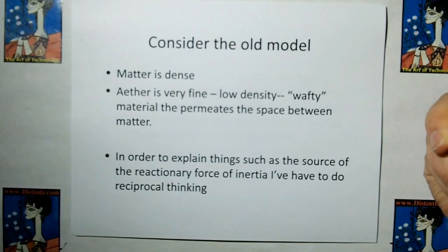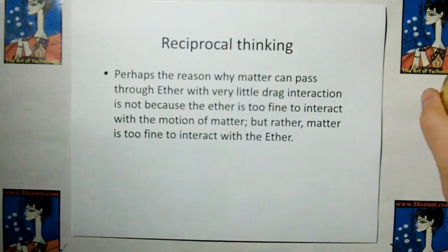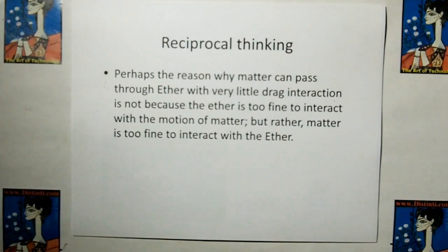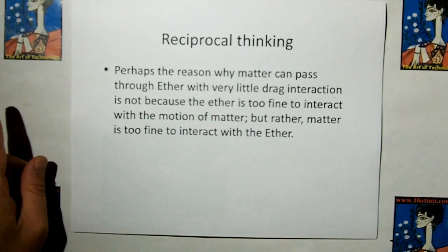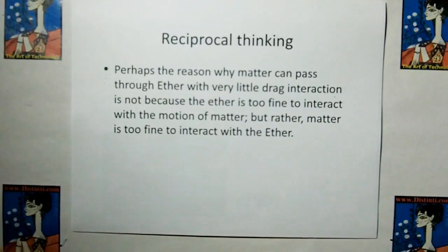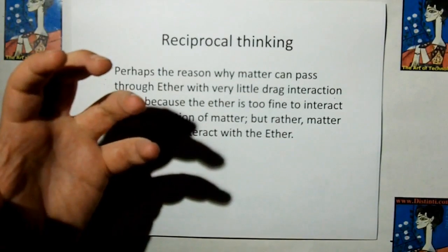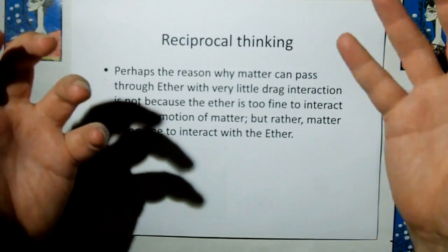It just can't be coming from inside. So if we use reciprocal thinking here — if we say perhaps the reason why matter can pass through the Ether with very little drag interaction is not because the Ether is too fine to interact with the motion of the matter, but rather matter is too fine to interact with the Ether — we got it backwards. Matter is not dense and Ether fine and wafty. It's matter that is fine and wafty, and the Ether that is dense.